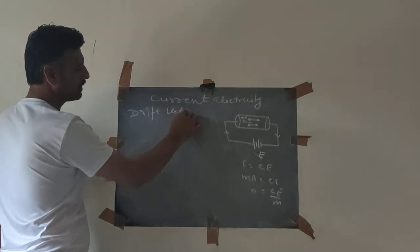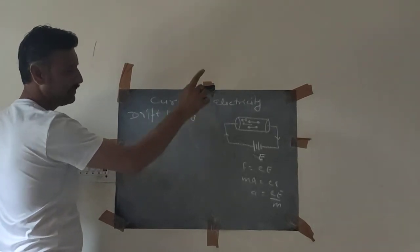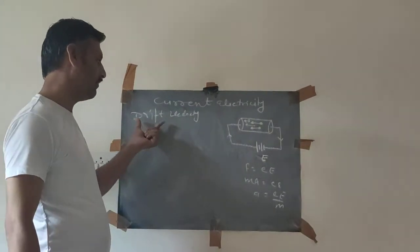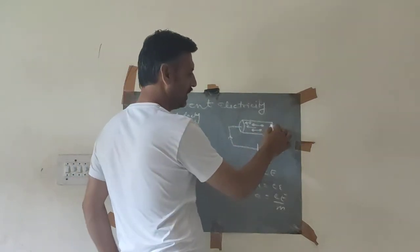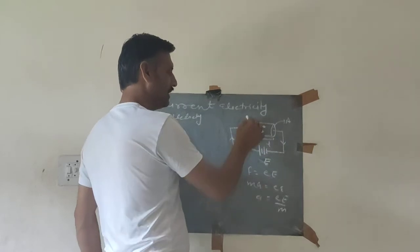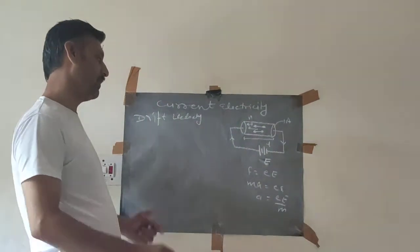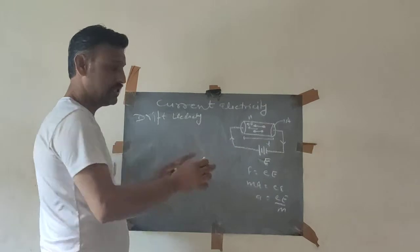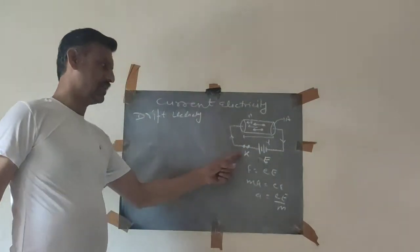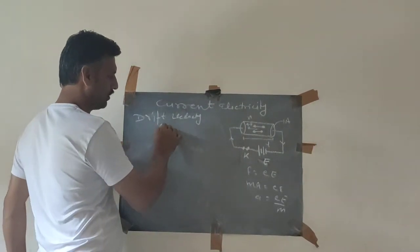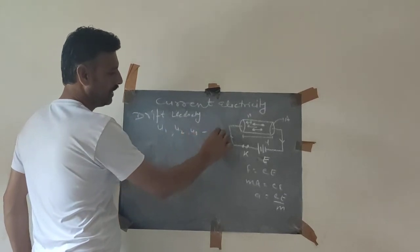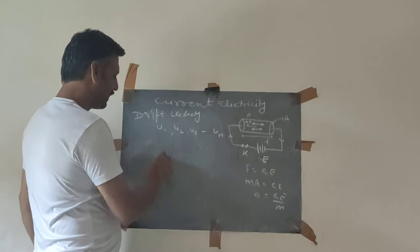Drift velocity is the average velocity with which electrons drift towards the positive terminal of a battery. To find drift velocity, we assume a conductor having area of cross-section A, length L, and number of electrons N. The initial velocity of each electron when electric field is not applied — when key is off — is U1, U2, U3, up to Un.